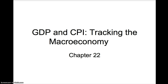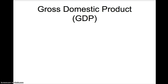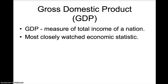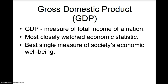The way to measure a nation's income is by calculating GDP. GDP stands for Gross Domestic Product and is the measure of the total income of a nation. This is one of the most closely watched economic statistics because it tells us whether or not we are in a recession. GDP is the single best measure of economic well-being that we have, though it is not a perfect statistic. We'll discuss some of the problems with GDP at the end of this chapter.